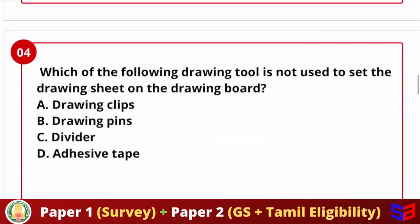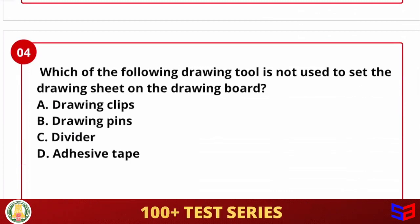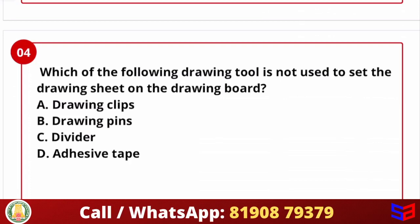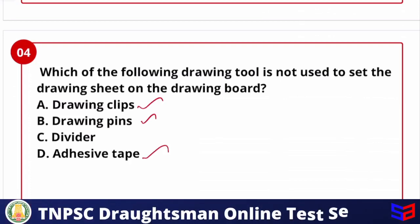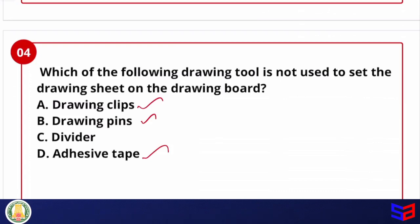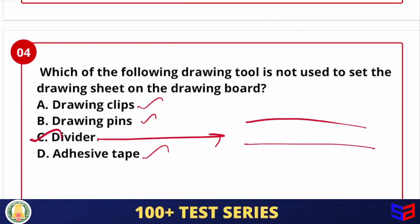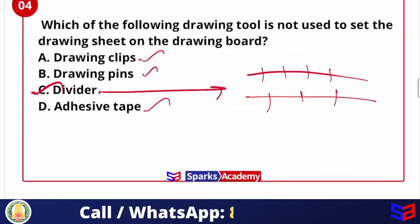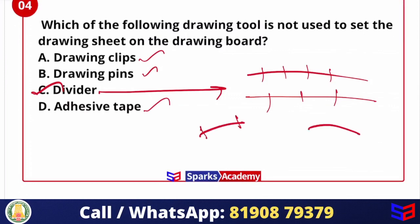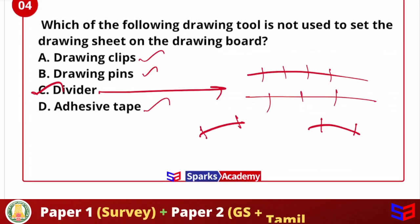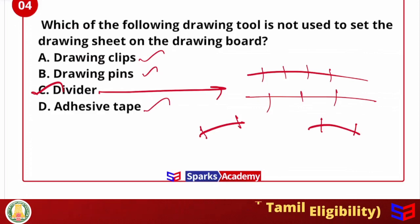Which of the following drawing tools is NOT used to set the drawing sheet on a drawing board? Options: drawing clips, drawing pins, divider, adhesive tape. Obviously clips, pins, and adhesive tape are all used to fix the sheet. The divider is NOT used for this purpose. The divider is used to divide a straight line into equal parts or to transfer lengths between different parts of a drawing.